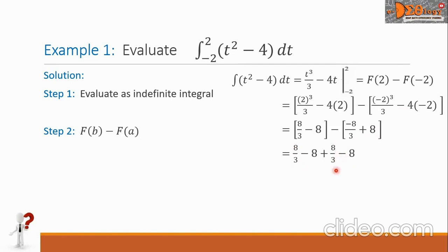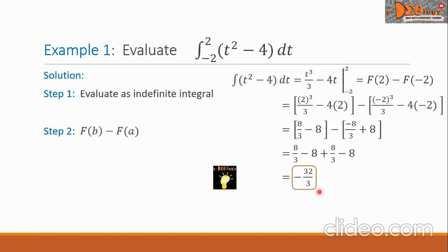We simplify these numbers to get negative thirty-two over three. This is our final answer.